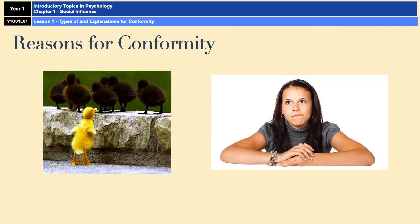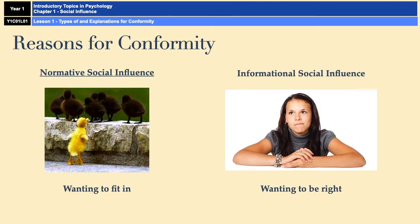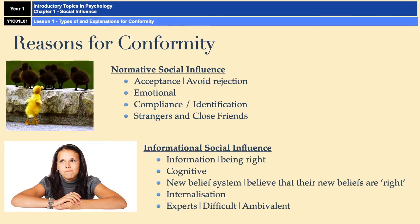Let's move on to why we conform. There are two main reasons for this. You have what's known as normative social influence, which is conforming in order to fit in or to be accepted, and then informational social influence, which is conforming because you want to be correct and do the right thing. Normative social influence is all about avoiding rejection and gaining acceptance — it's a very emotional reason for conforming to a majority.